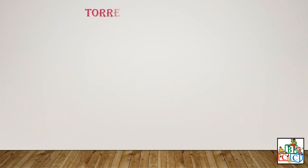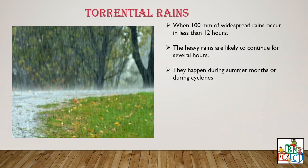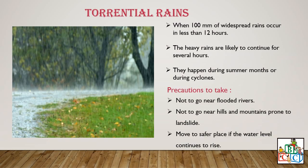Let us take a look at torrential rains. Torrential rains occur when 100 millimeters of widespread rain falls in less than 12 hours. The heavy rains are likely to continue for several hours and happen during summer months or during cyclones. Precautions include: do not go near flooded rivers, do not go near hills and mountains prone to landslides, and move to a safer place if the water level continues to rise.